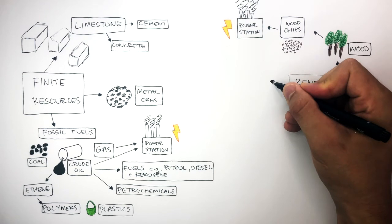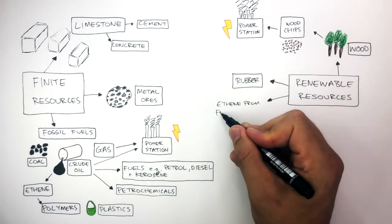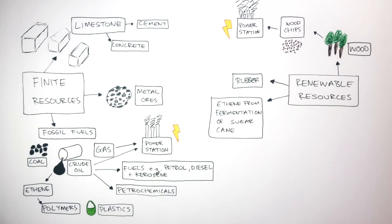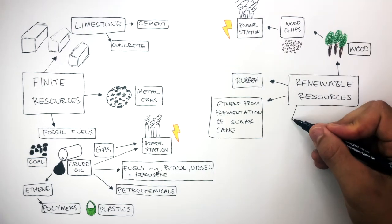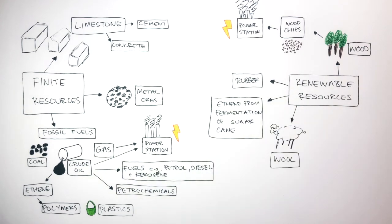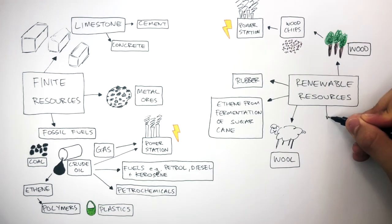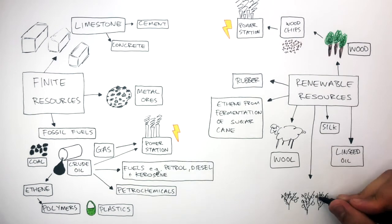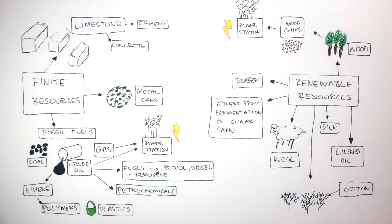Other renewable resources include rubber, and also ethene from the fermentation of sugarcane. Notice how ethene can either be a finite resource, if the ethene comes from the crude oil, or a renewable resource, if the ethene comes from the fermentation of sugarcane. Another renewable resource is the wool from sheep. This wool is only going to be renewable as long as we let the wool grow back on the sheep at the same rate as we take the wool from the sheep. Finally, silk, linseed oil, and cotton are all examples of renewable resources.